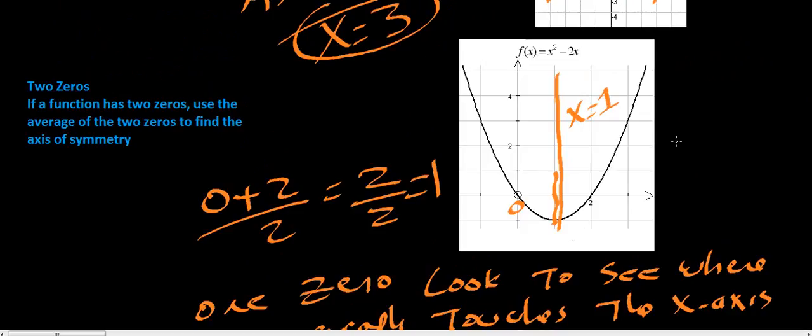And that's it. That's how you use zeros to find your axis of symmetry. Hope this answered all your questions.